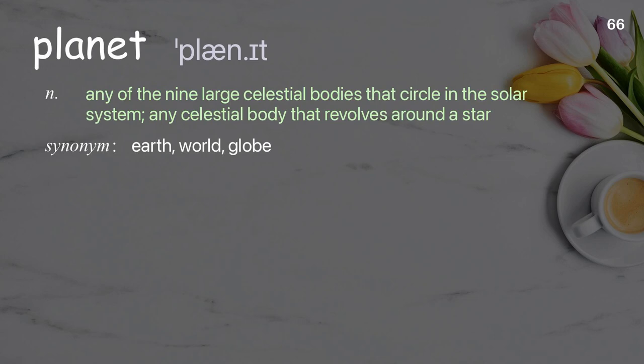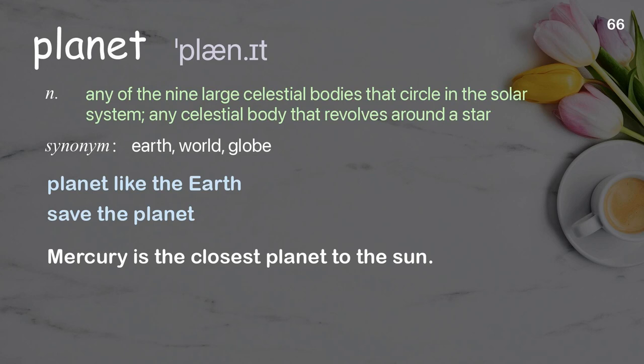Planet: any of the nine large celestial bodies that circle in the solar system; any celestial body that revolves around a star. Examples: planet like the earth; save the planet. Mercury is the closest planet to the sun.